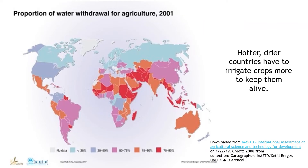In general, hotter and drier countries have to irrigate crops more to keep them alive. On this global map, countries that are red or orange use the largest percentage of the freshwater they withdraw for agriculture, while blue and purple countries use the lowest percentage. Countries in the mid-latitudes are most likely to be orange or red, as these regions tend to be dry compared to tropical regions and hot compared to cooler latitudes closer to the poles. The red countries, found in Northern Africa, the Middle East, and Southern Asia, use more than 75% of the water they withdraw for agriculture.